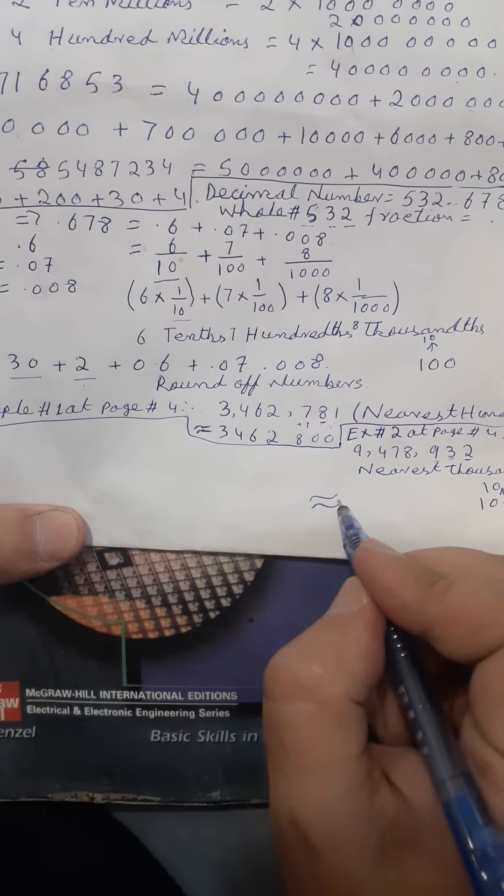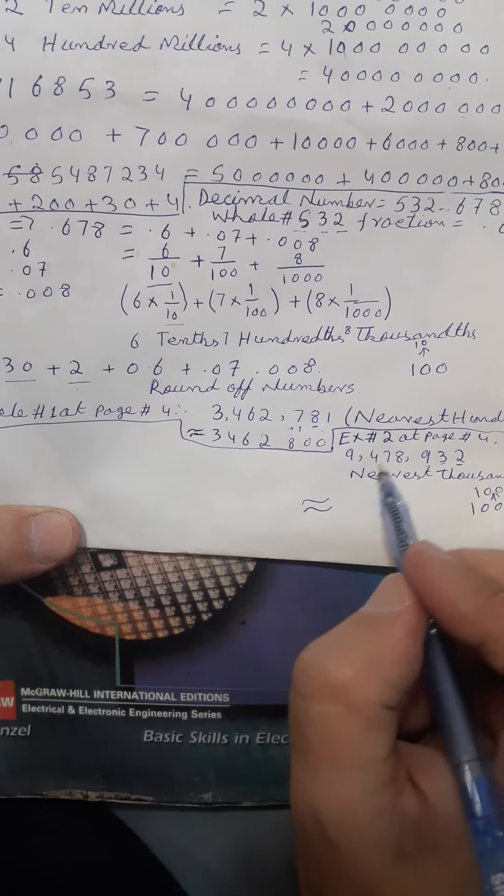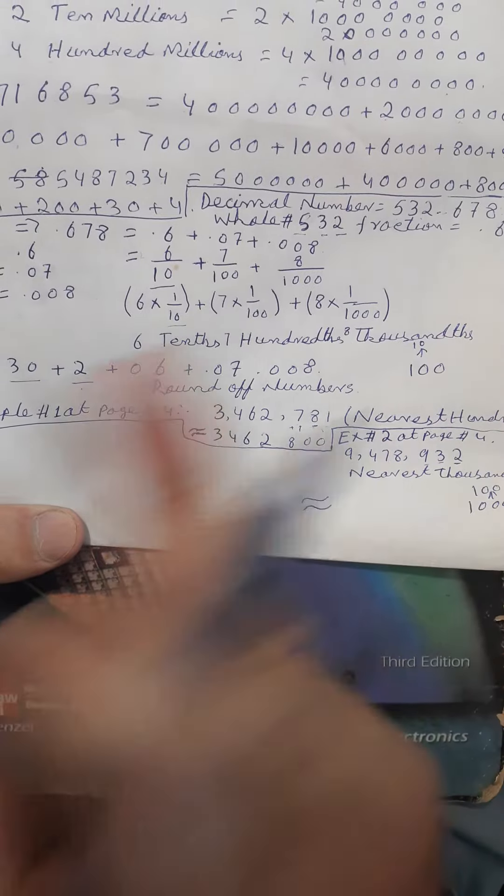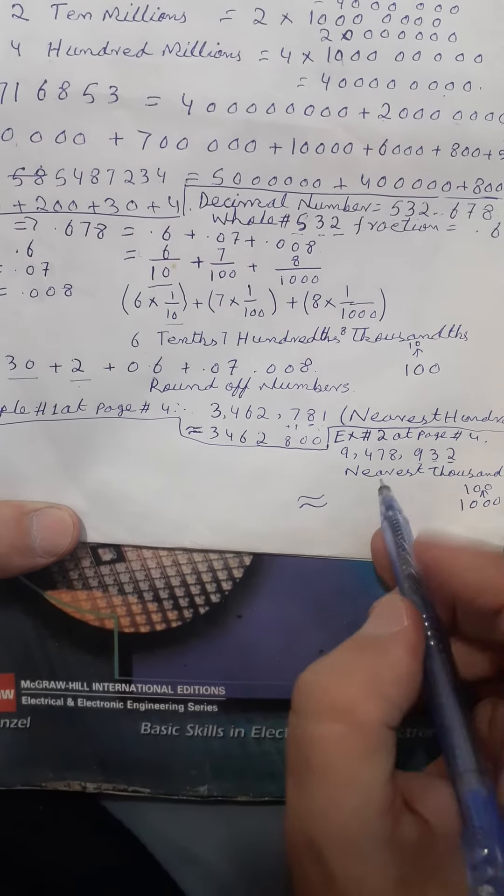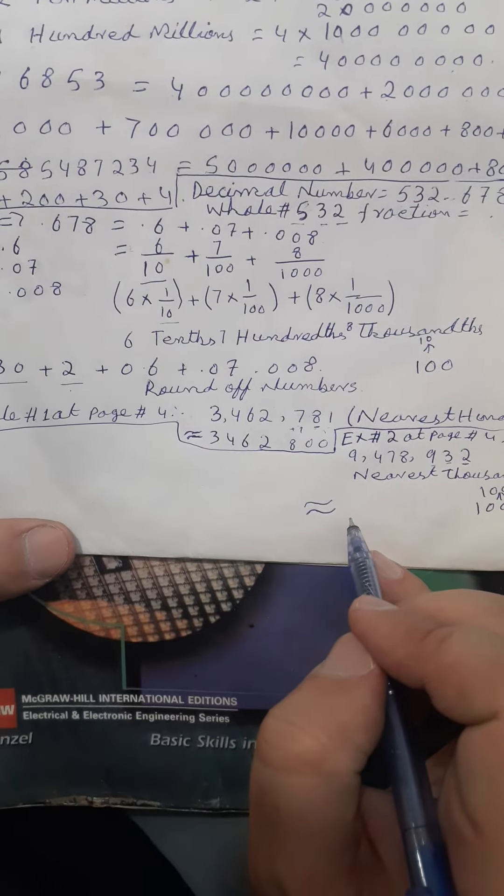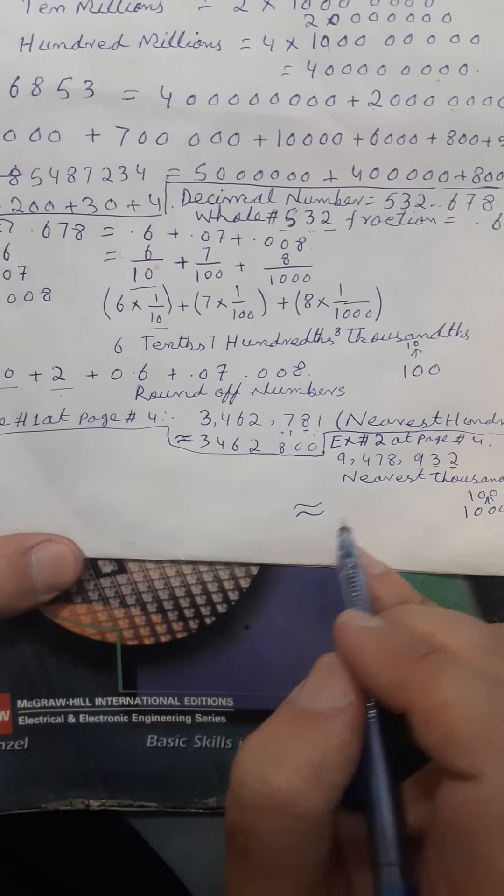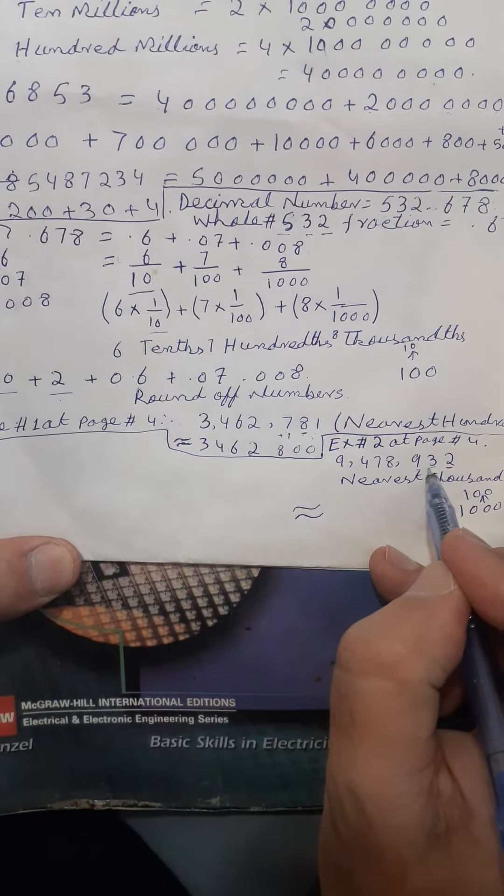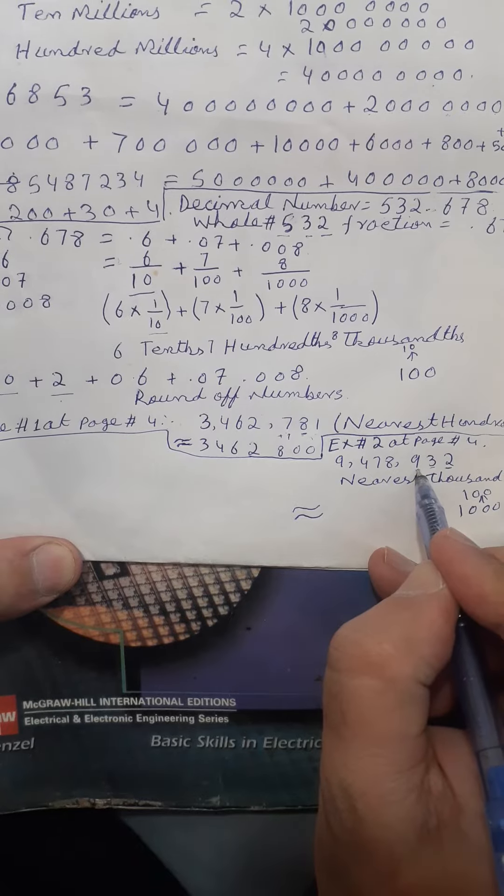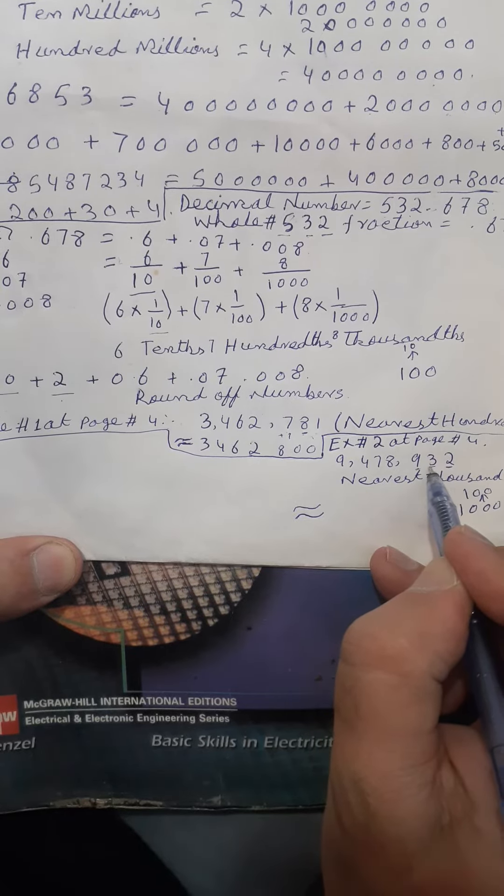It's approximately the number of reasons. You can see the number exactly the list or the more. You can see exactly the rest of them. So this is the number of reasons. Because the number of reasons is the number of reasons. If you have to see it, you can see the number of the unit.